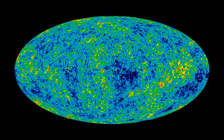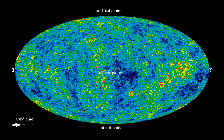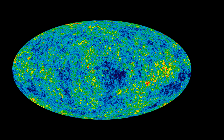Here's a projection of the celestial dome, as seen by the Wilkinson Microwave Anisotropy Probe, factoring out all local and local group motion. The mapping preserved the relative sizes of the surface objects.